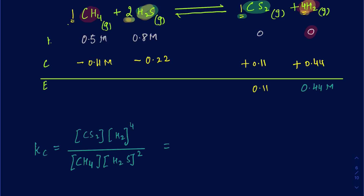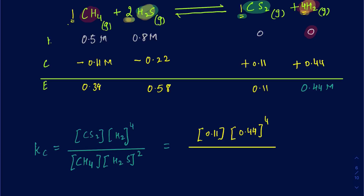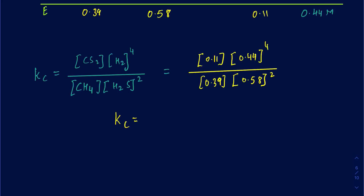So our equilibrium concentrations are: CH4 = 0.39 M, H2S = 0.58 M, CS2 = 0.11 M, and H2 = 0.44 M. Plugging into the Kc expression: (0.11)(0.44)^4 divided by (0.39)(0.58)^2. After doing this math, I get Kc equals 0.0314.